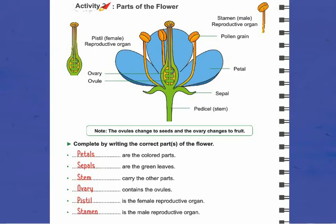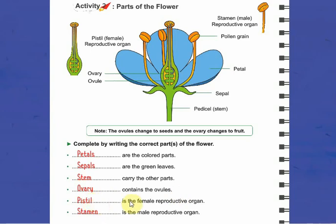Our last lesson was about the parts of the flower and the plant cycle. Let's remember the parts: stem, sepal, petal, stamen which contains the pollen grain, and pistil which contains the ovary and ovules. Petals are the colored parts, sepals are the green leaves, the stem carries the other parts, the ovary contains the ovules, the pistil is the female reproductive organ, and the stamen is the male reproductive organ.